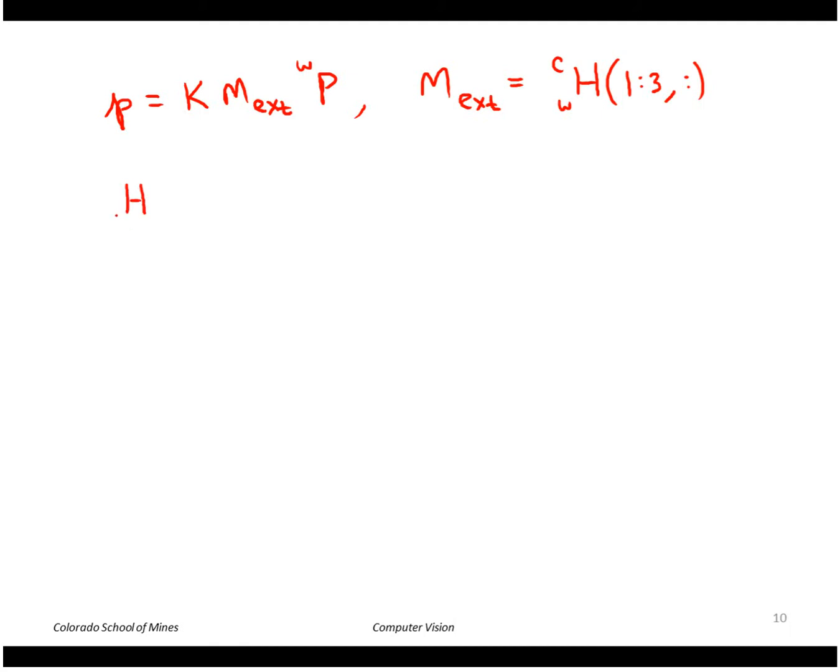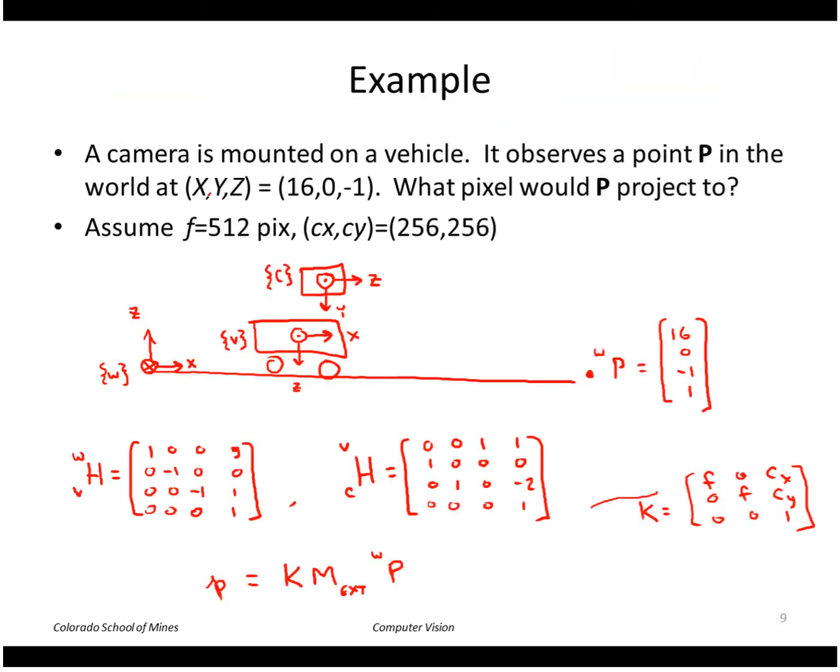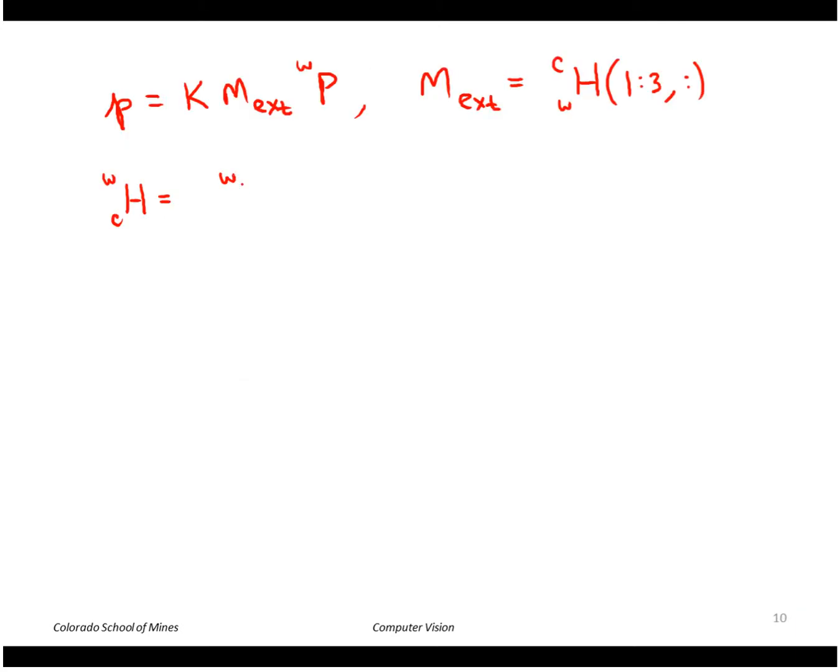It's actually easier to find the camera to world transform. So from before, if I look at what I had before, I knew the vehicle to world and camera to vehicle. So I'll multiply vehicle to world times camera to vehicle. And again, the convention is that the leading subscript cancels the trailing superscript here.